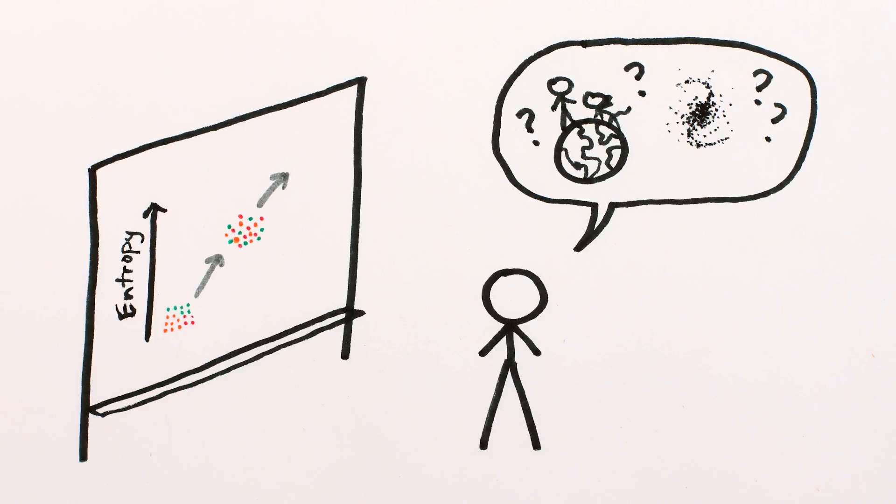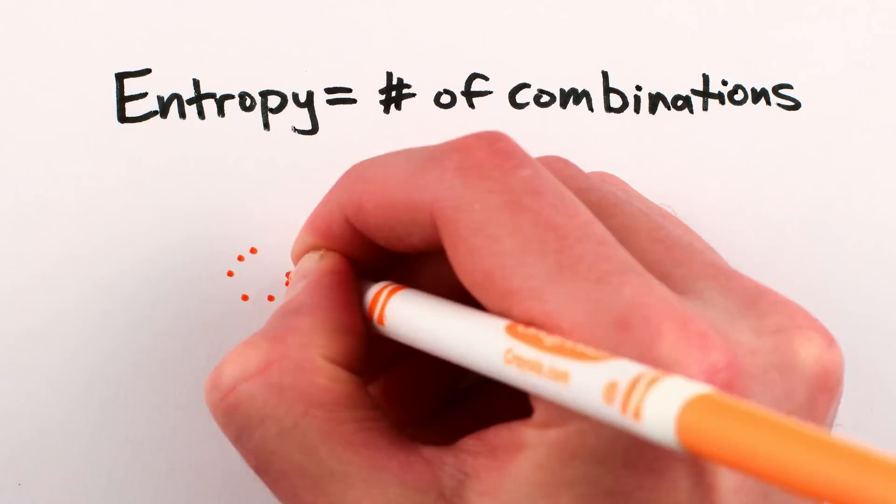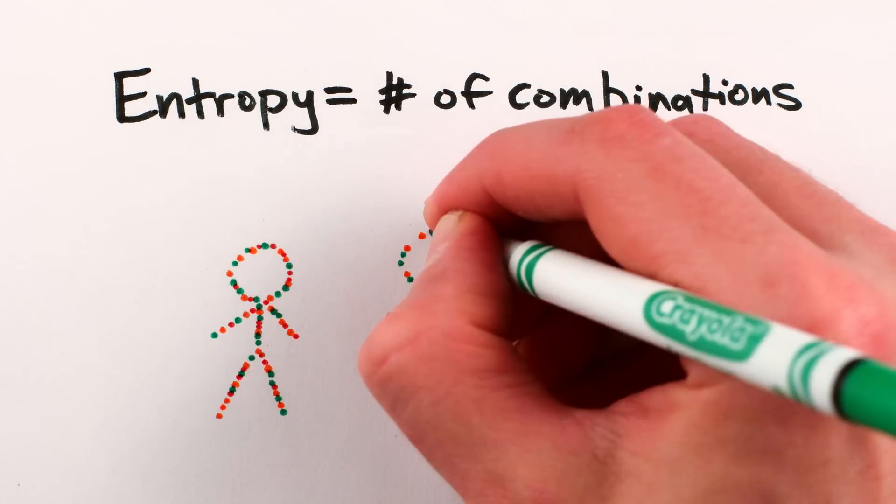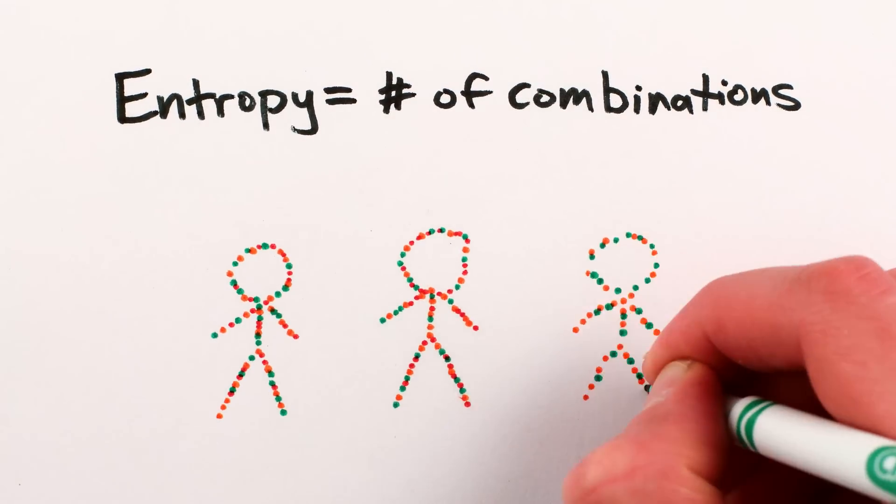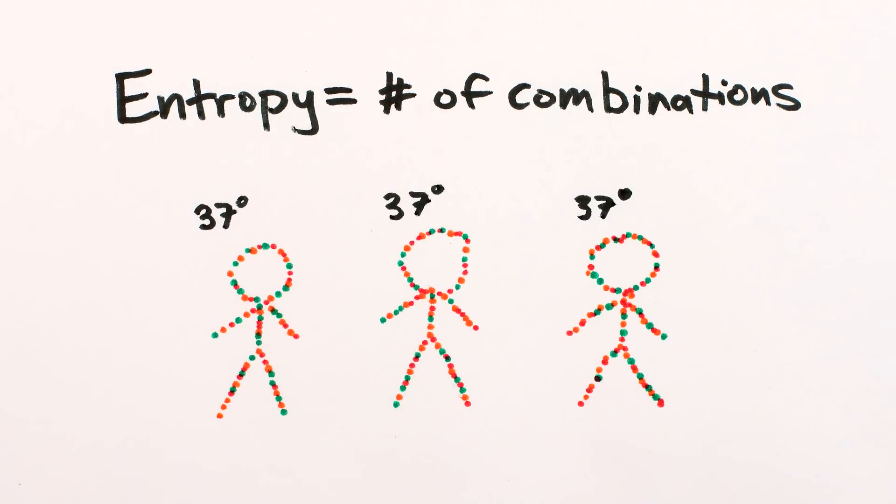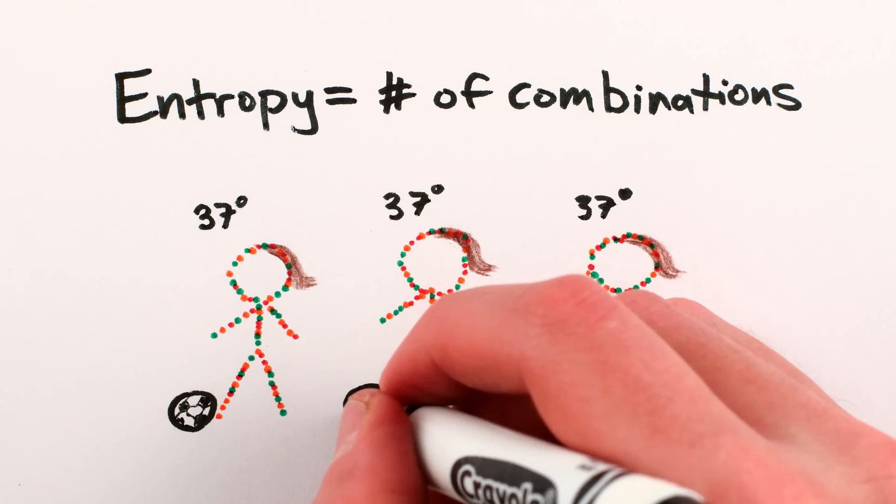The secret is that order and complexity are very different ideas. Entropy measures how many different ways you can make an arrangement of small-scale particles that have the same large-scale properties, like 37 degrees Celsius, brown hair, good at soccer, and so on.